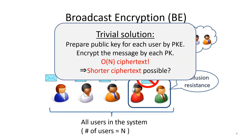A trivial solution to construct broadcast encryption is to prepare a public key for each user using a plain public key encryption scheme. When we encrypt a message for a subset of users, we encrypt the message using the public keys corresponding to those users. However, this solution requires a long ciphertext, which is linear in the number of users in the worst case. We are interested in a construction with shorter ciphertext.